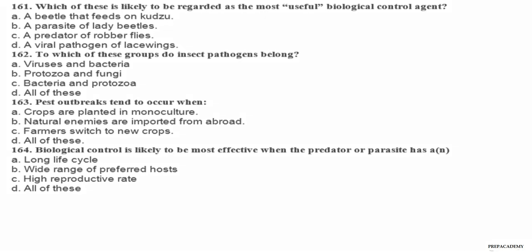Question 161. Which of these is likely to be regarded as the most useful biological control agent? A a beetle that feeds on kudzu, B a parasite of lady beetles, C a predator of robber flies, D a viral pathogen of lacewings. Question 162. To which of these groups do insect pathogens belong? A viruses and bacteria, B protozoa and fungi, C bacteria and protozoa, D all of these. Question 163. Pest outbreaks tend to occur when: A crops are planted in monoculture, B natural enemies are imported from abroad, C farmers switch to new crops, D all of these.